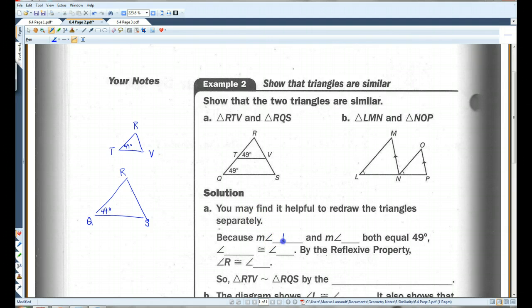Because the measure of angle T and the measure of angle Q both equal 49 degrees, angle T is congruent to angle Q. By reflexive property, angle R is going to be congruent to itself. Notice that both these triangles share an angle.